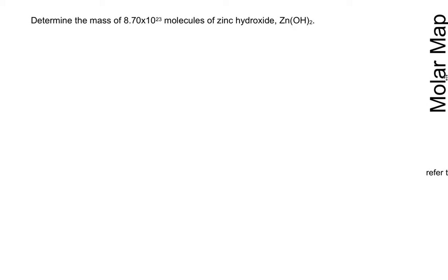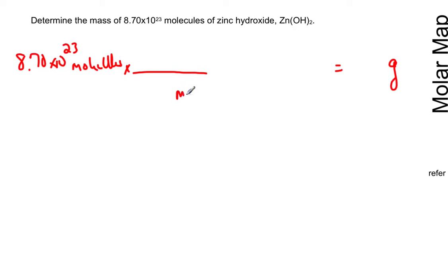Now I'm going to make sure I use the right conversion factors. Let's start with where we're going. We're trying to get to grams. We want to know the mass in grams of all these zinc hydroxide molecules. So I'm going to start with the amount that I have: 8.70 × 10²³ molecules. Molecules is going to go on the bottom so it can cancel out.